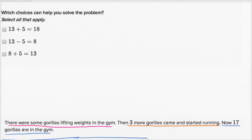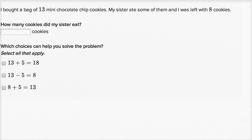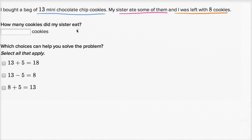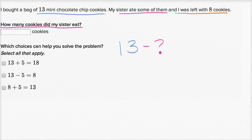This is more of what you might see on Khan Academy, and it's good to know what they're asking for. So this says: I bought a bag of 13 mini chocolate chip cookies. My sister ate some of them, and I was left with eight cookies. How many cookies did my sister eat? So I had 13 cookies, my sister ate some — those cookies are going away, so I'm going to subtract those cookies. That's the question mark. I was left with eight cookies. So 13 minus something is equal to eight.